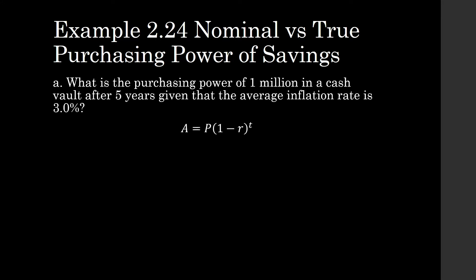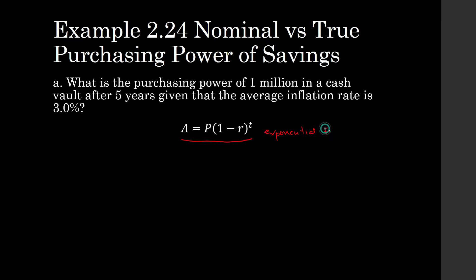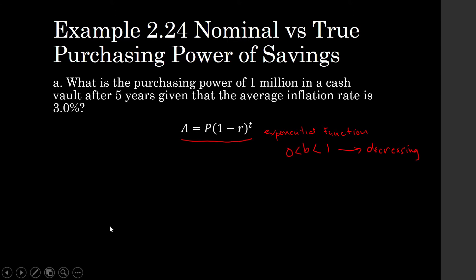The effect of inflation rate is to reduce the value of our money, which is why we use this generating formula to produce the future value of 1 million pesos. This is an exponential function whose base is less than 1 but greater than 0, meaning the function is decreasing. So the effect of (1 minus R) is to reduce the value of our 1 million pesos over the period of 5 years.